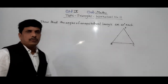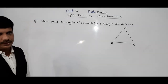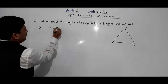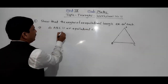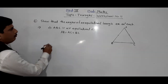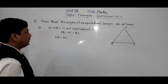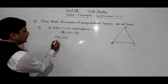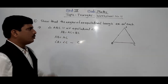The third problem from worksheet 11: show that the angles of an equilateral triangle are 60 degrees each. In an equilateral triangle ABC, all three sides are equal — AB equals AC equals BC.